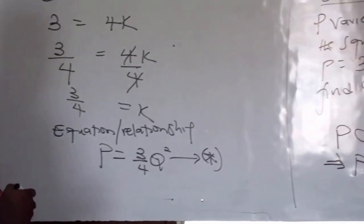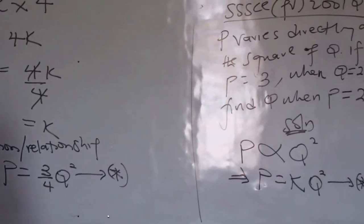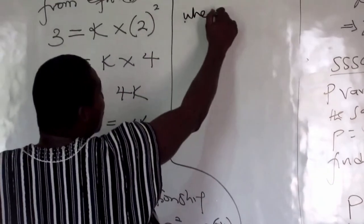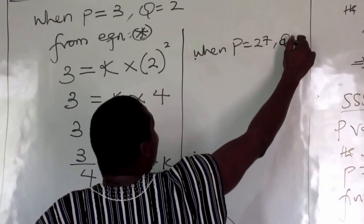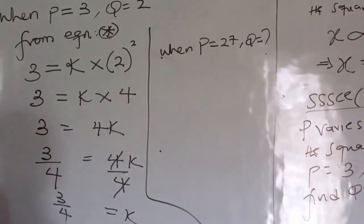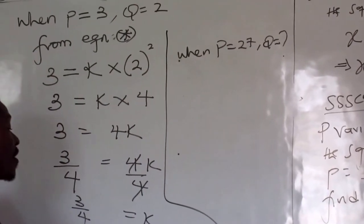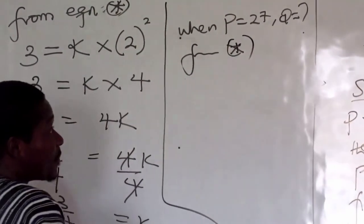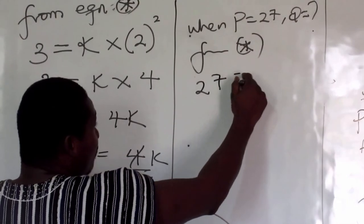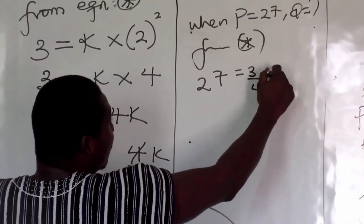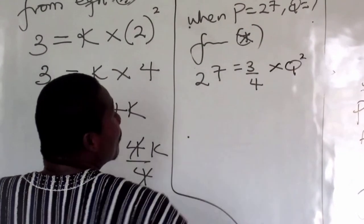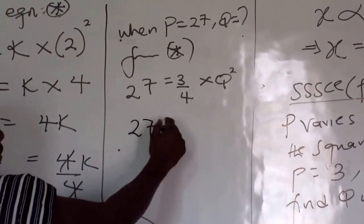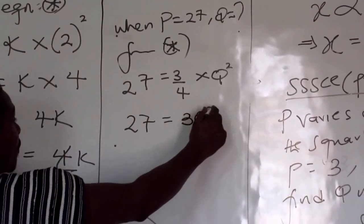So that is it. So we have P equals three-fourths Q squared. Good. Now let's go to the second condition there. Now they said when P is 27, to find Q. So when P is 27, find Q. We don't know, so I put question mark there. We still make reference from equation star.